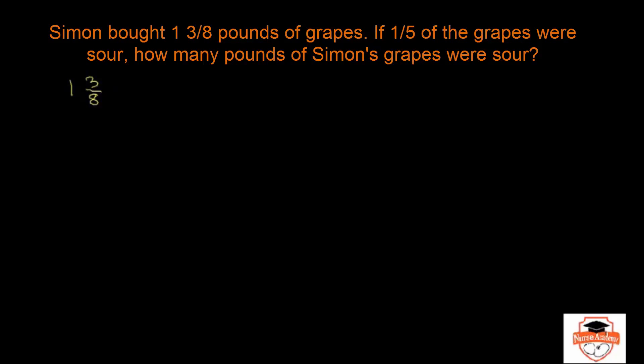If 1/5 of the grapes were sour, meaning 1/5 of what he has bought is sour, how many pounds of Simon's grapes were sour? Now let's try and understand the problem. Let's say this is all of Simon's grapes, right?